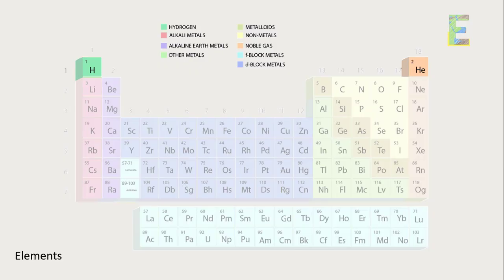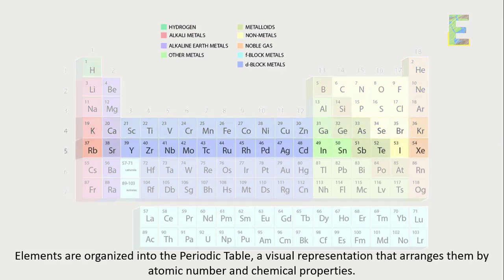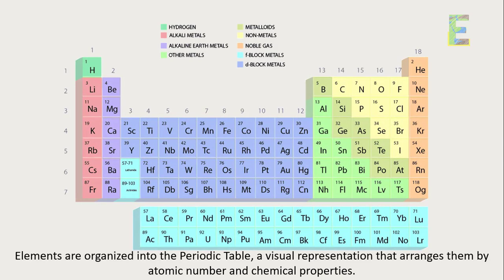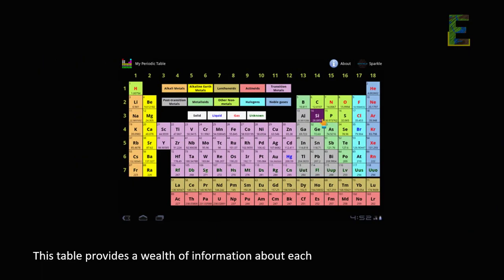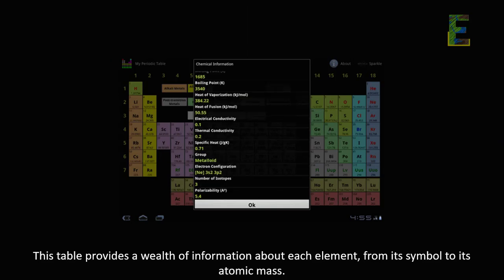The periodic table. Elements are organized into the periodic table, a visual representation that arranges them by atomic number and chemical properties. This table provides a wealth of information about each element, from its symbol to its atomic mass.